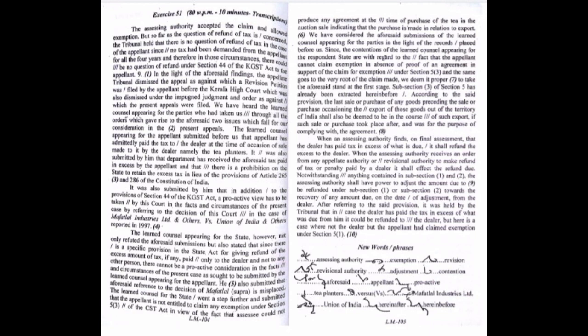Notwithstanding anything contained in subsection 1 and 2, the assessing authority shall have power to adjust the amount due to be refunded under section 1 or subsection 2 towards the recovery of any amount due, on the date of adjustment, from the dealer.